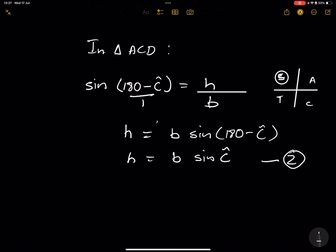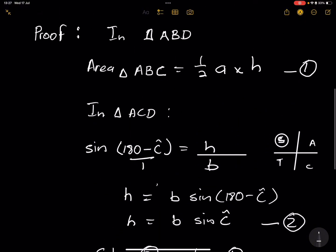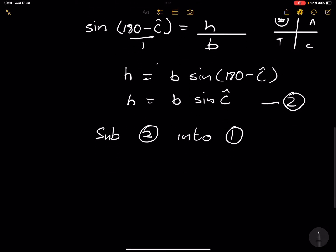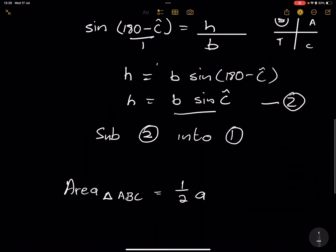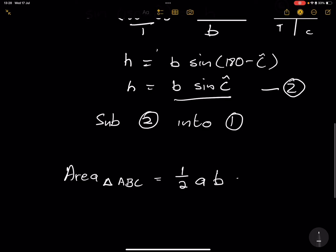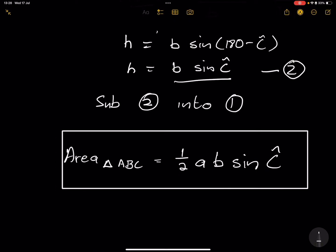All we're going to do is substitute equation 2 into equation 1. Now that we've got H, the area of triangle ABC equals half of A, and substituting H we get B sine of angle C. So the area equals half A times B times sine of angle C — and we have proven what we were required to prove.